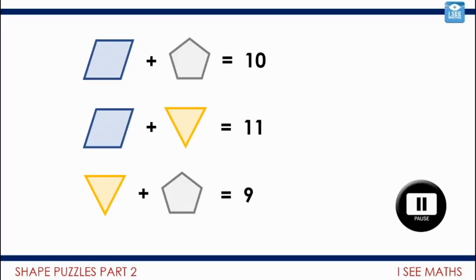Okay, let's have a look at this one. So, well, if we look at this top line, I can see that the rhombus plus the pentagon equals 10. And on the second line, the rhombus plus the triangle equals 11. So I know that this stays the same. The rhombus stays the same on both of them. And the pentagon and the triangle, well, which is more? Well, actually, the triangle must be worth more. It must be one more than the pentagon. The triangle is one more than the pentagon because 11 is one more than 10.